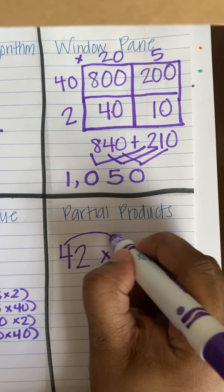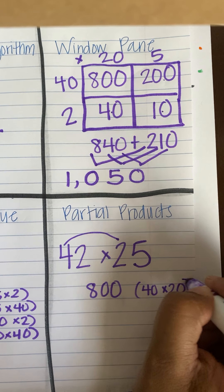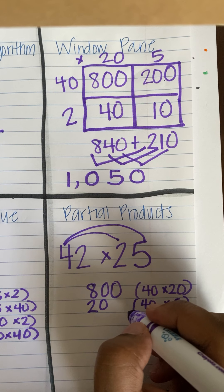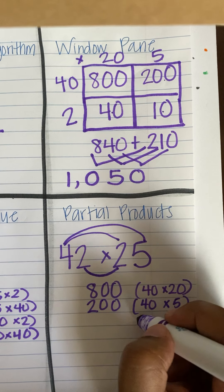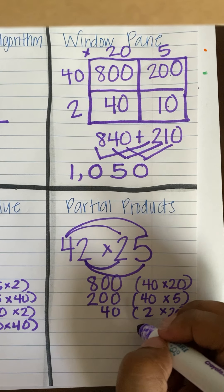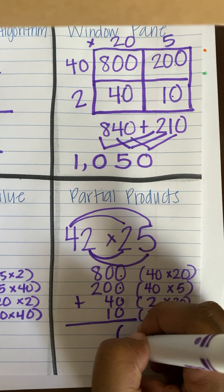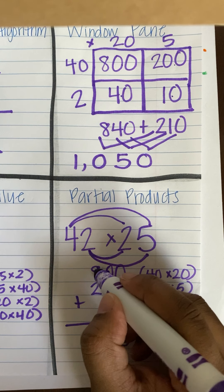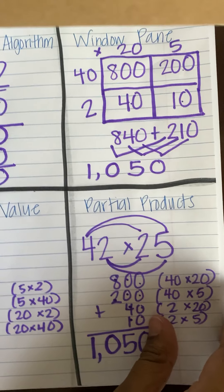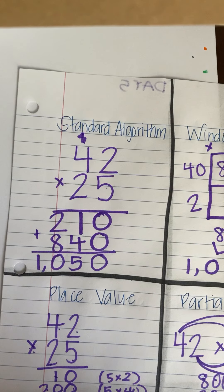Moving on to partial products. I have 42 times 25. First thing I'm going to say: 40 times 20 is 800. Then 40 times 5 is 200. And then I have 2 times 20, and I know that that is 40. Lastly I have 2 times 5, and I know that that is 10. I'm going to put all that together: zero plus zero plus zero plus zero is zero, zero plus zero plus 40 plus 10 is 50, 800 plus 200 is 1000. Therefore I know that there are 1,050 pounds of soil in all.